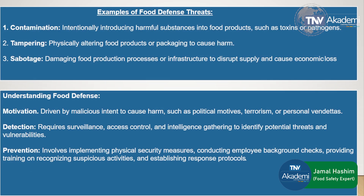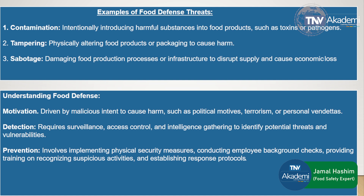Examples of food defense threats include: contamination — intentionally introducing harmful substances such as toxins or pathogens into food products; tampering — physically altering food products or packaging to cause harm; and sabotage — damaging food production processes or infrastructure to disrupt supply and cause economic loss. Food defense motivation is driven by malicious intent to cause harm, such as political motives or terrorism. Detection requires surveillance, access control, and intelligence gathering. Prevention involves physical security measures, employee background checks, training to recognize suspicious activities, and establishing response protocols.